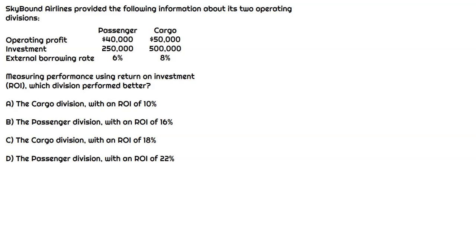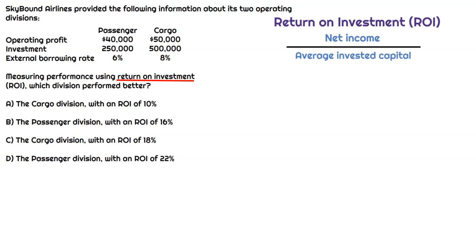In this question, we have Skybound Airlines, and they have two different divisions. They have the passenger airplane, where they transport passengers all over the world, and then they have the cargo division, where they're moving around Amazon boxes shipped to your door. Ultimately, this question wants us to figure out which division performed better using the return on investment metric. That formula is net income divided by invested capital or average invested capital. Return on investment is a type of profitability ratio, and they want us to figure out which division is more profitable for Skybound Airlines.